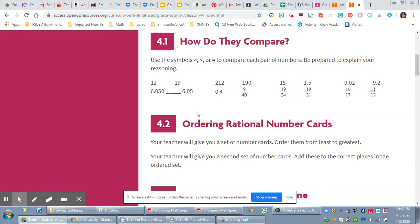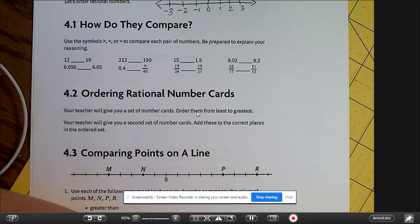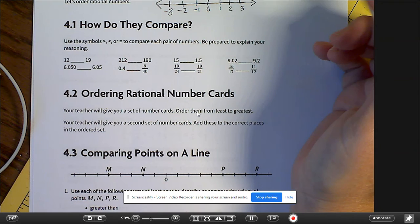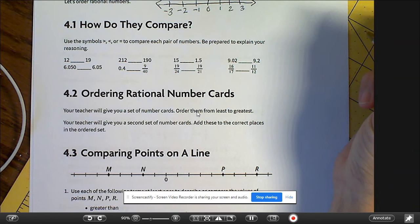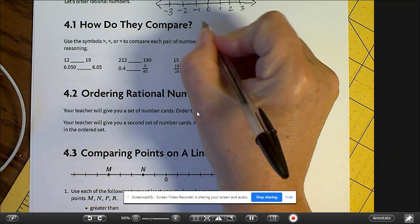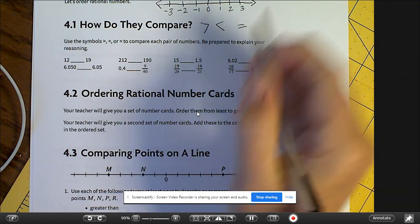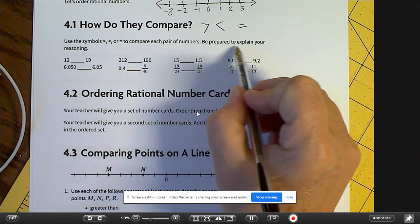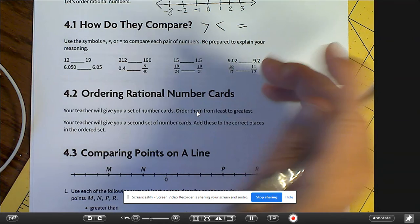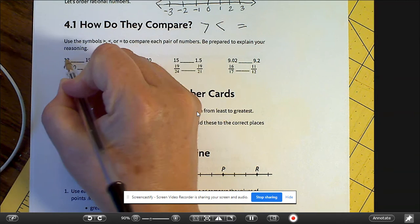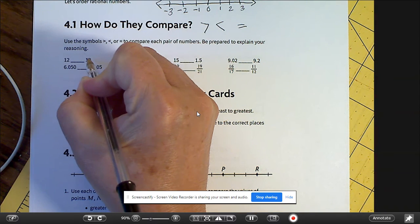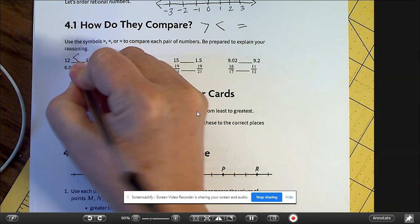Okay, so I'm going to go over to my workbook pages and you can either follow along on paper or print these out. Okay, so we're using greater than, which is this one, less than or equal to to compare each pair of numbers. Be prepared to explain your reasoning. All right, so we know 12 is to the left of 19 on the number line, so it is less than.